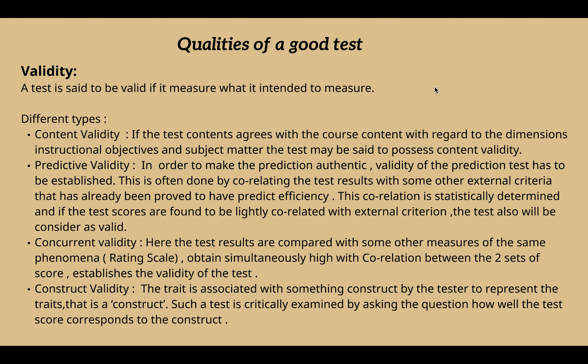So we have different types of validities. Validity basically means that if a test measures what it is intended to measure, that test has validity. We have content validity, predictive validity, concurrent validity, and construct validity.